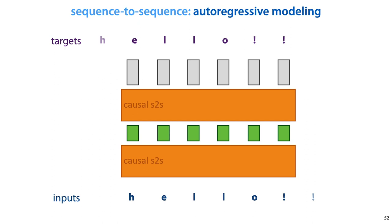The final output sequence we apply a softmax to, and we interpret it as a probability distribution on the output characters, and we compute the log loss and train by back-propagation. This effectively trains the model to produce a probability distribution for the next character in the sequence at every point in the sequence.